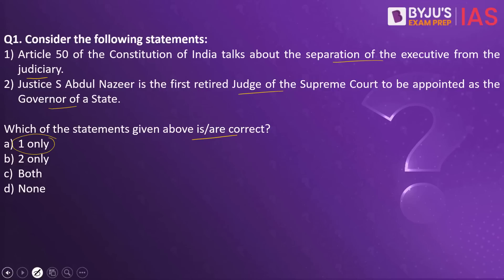Let's look into the first statement: Article 50 of the Constitution of India talks about the separation of the executive from the judiciary. This statement is right. When you look at the United States of America, what we have is a clear-cut separation of powers — legislature, executive, and judiciary.